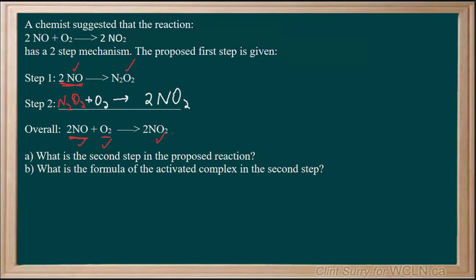This means that my proposed second step of this reaction mechanism would be N2O2, the reaction intermediate, plus O2, one of the reactants, making 2NO2. That would be our product.